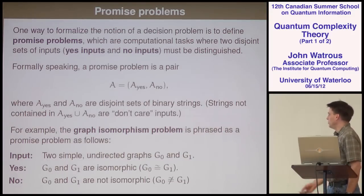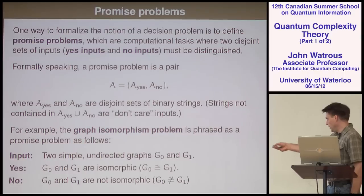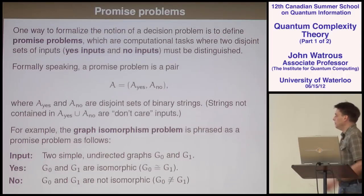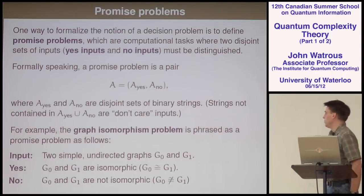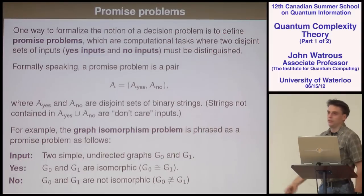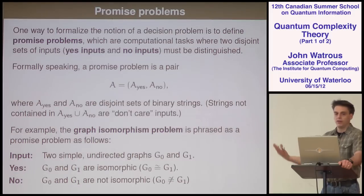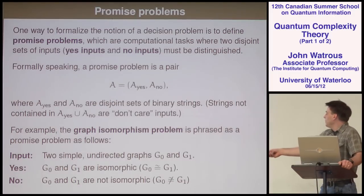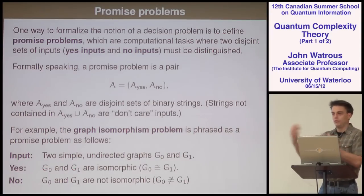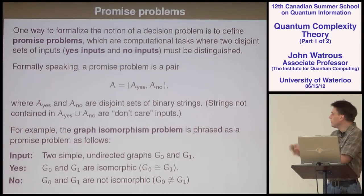Here's an example I'll come back to numerous times: the graph isomorphism problem. We can phrase it as a promise problem. The input is two simple undirected graphs — graphs with no multiple edges, no self-loops, no directed edges. The yes case is when the two graphs are isomorphic: you can relabel the vertices of one graph to give exactly the same edge relations as the other. The no case is simply when that is not true.